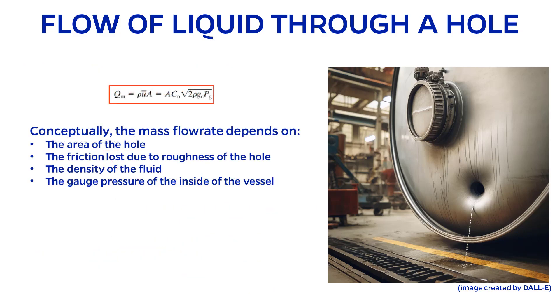So there we have it. Here is our source model for the mass flow rate of liquid through a hole, which depends on the area of the hole, the friction loss due to the roughness of the hole, the density of the fluid, and the gauge pressure of the inside of the vessel.